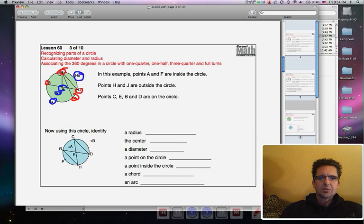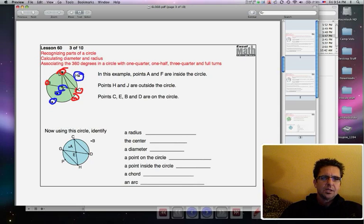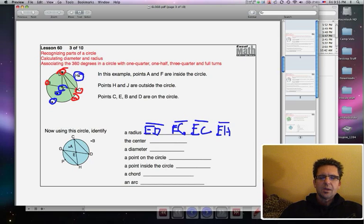There are several possible correct answers for the radius. The radii include ED or DE, you could also name EG or GE, you could also name EC or CE. Notice how I'm putting a little line segment symbol on top of these. Or you could name EH or HE. Doesn't matter if you reverse those. The center of the circle, everybody pretty much has to have the same answer for that, which is E. E is the center.